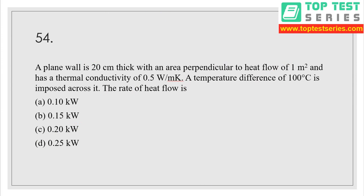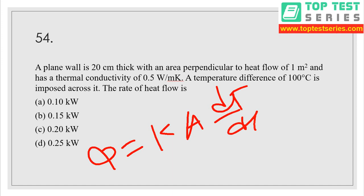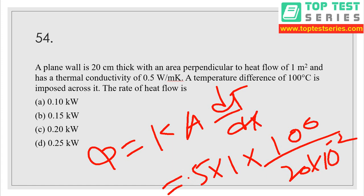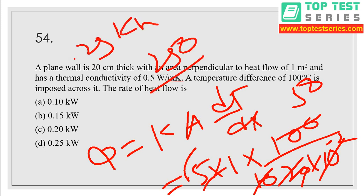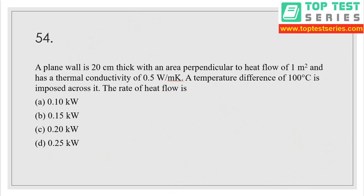Question number 54: a plane wall is 20 centimeter thick with area 1 m² perpendicular to heat flow and thermal conductivity 0.5 watt per meter Kelvin. Temperature difference imposed is 100°C. Q = K × A × dT / dx = 0.5 × 1 × 100 / 0.2 = 250 watts = 0.25 kilowatt — option D is the correct answer.